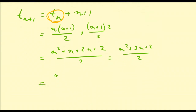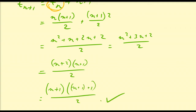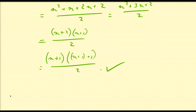That factors nicely as n plus 2 times n plus 1 over 2, which is n plus 1 times n plus 1 plus 1 all divided by 2. So the inductive step holds. We have proven via mathematical induction that tk equals k times k plus 1 over 2 for k greater than or equal to 1.